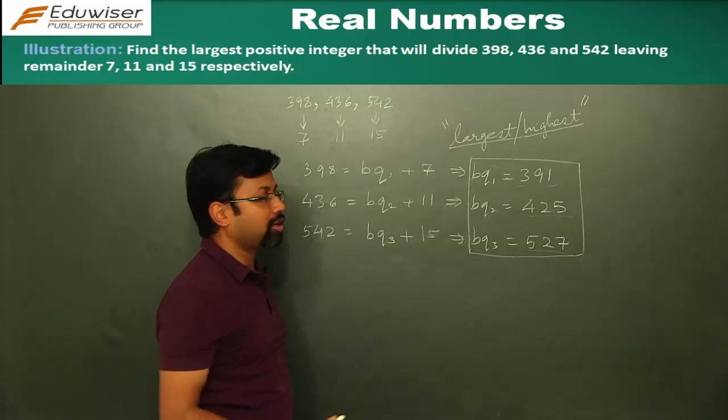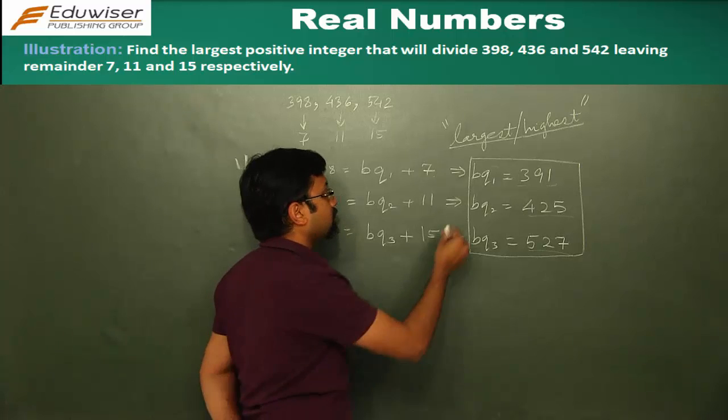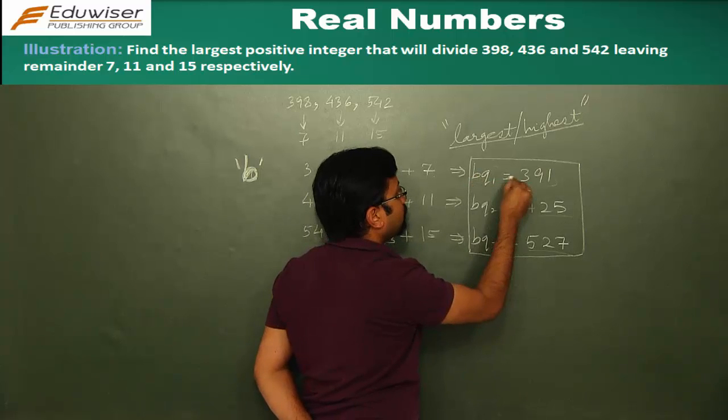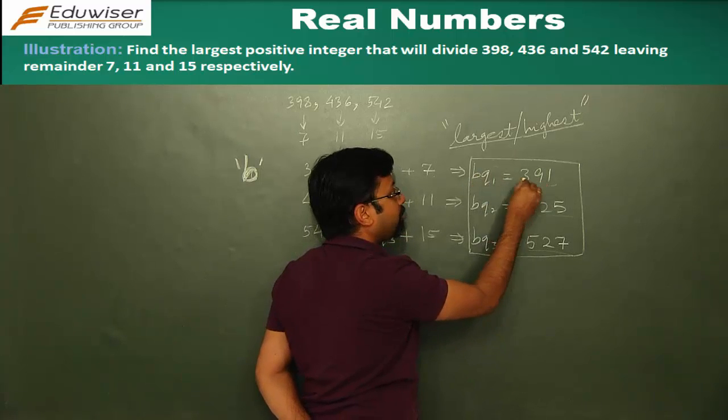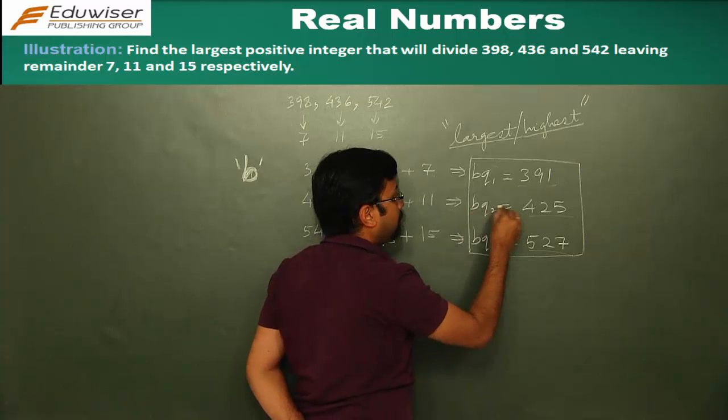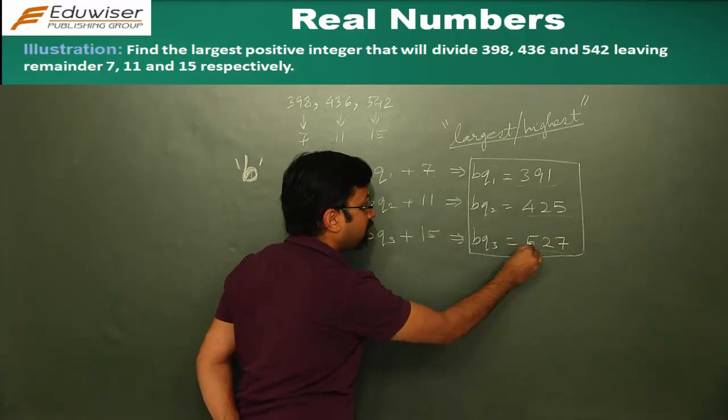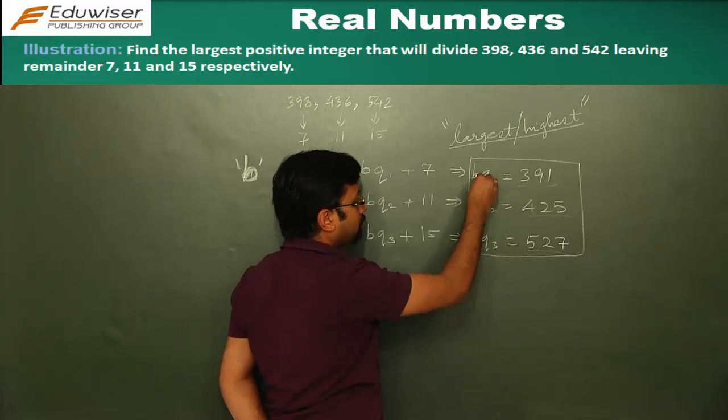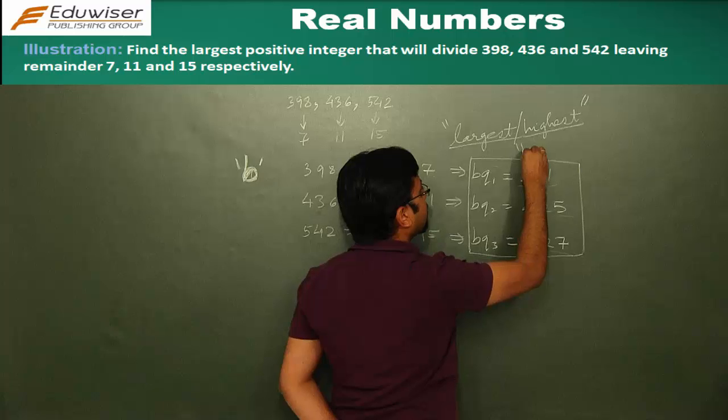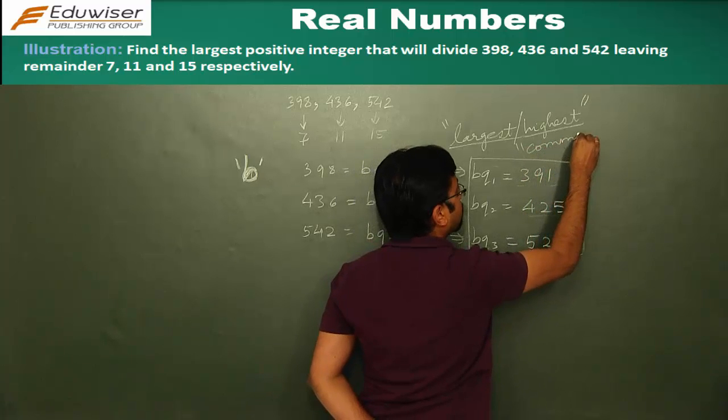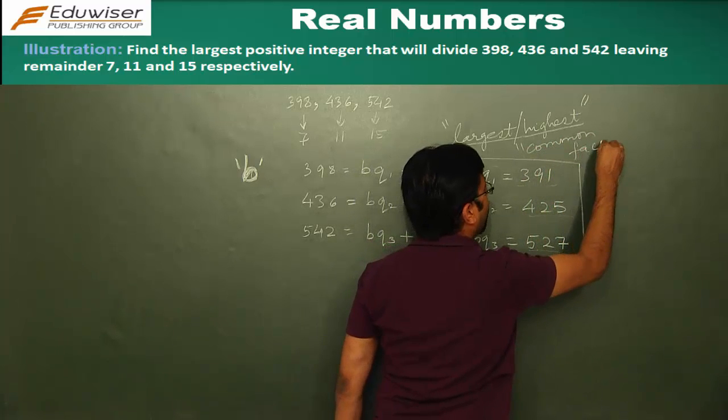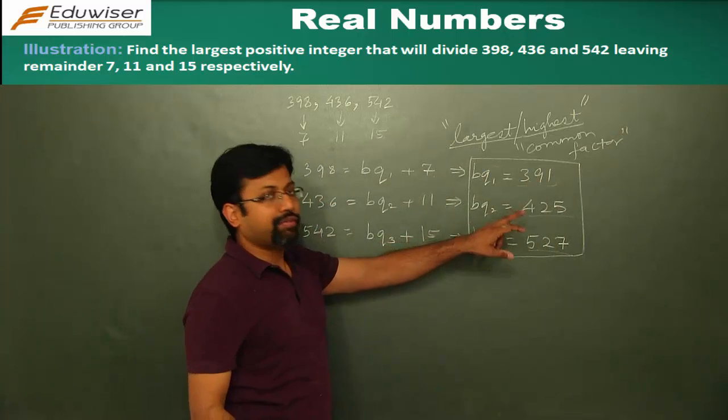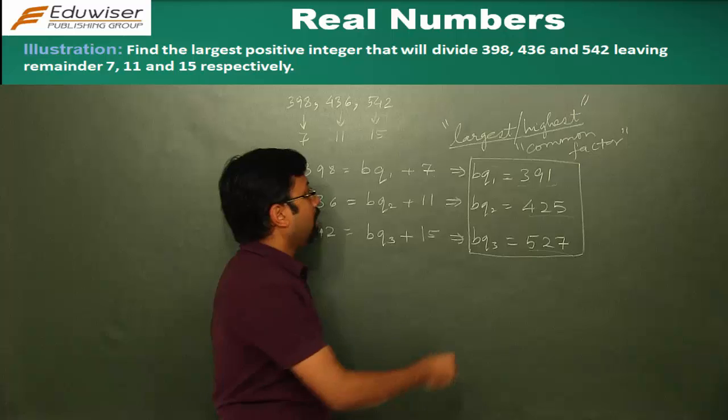Q1, Q2, Q3 are all integers. The quotients are integers. So B has to be an integer. Now B into something is equal to 391. That means B is a factor of 391. Similarly, B is a factor of 425. And similarly, B is a factor of 527. So another common property, another property of B is that it is a common factor of 391, 425 and 527.